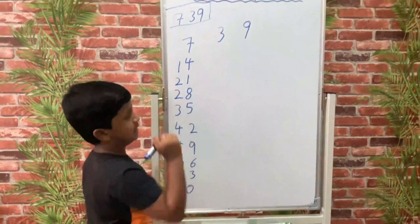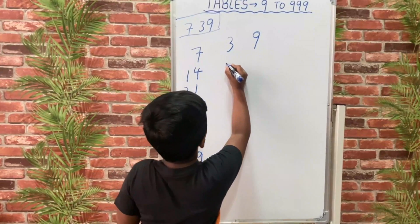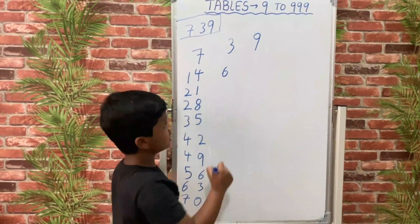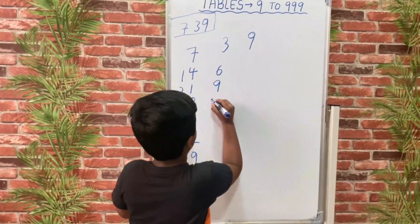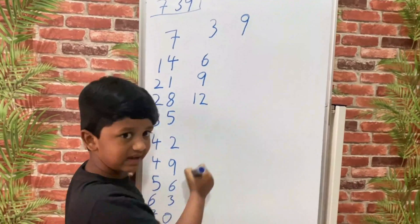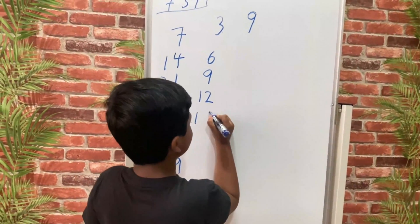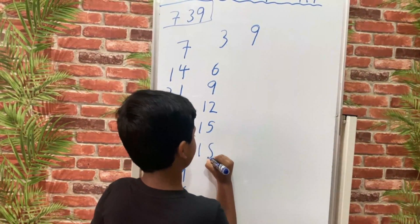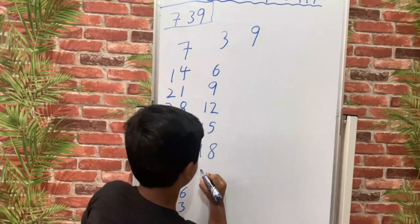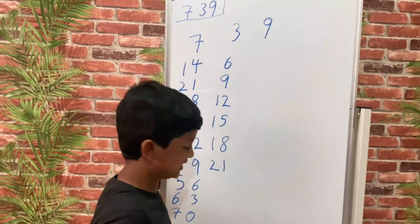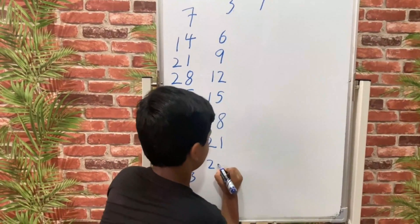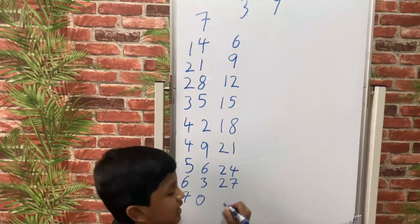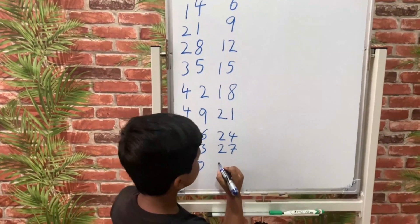Then we write the 3 times table: 3×1 is 3, 3×2 is 6, 3×3 is 9, 3×4 is 12, 3×5 is 15, 3×6 is 18, 3×7 is 21, 3×8 is 24, 3×9 is 27, 3×10 is 30.